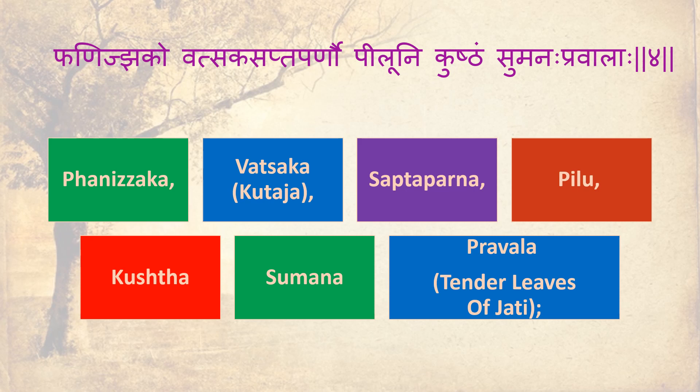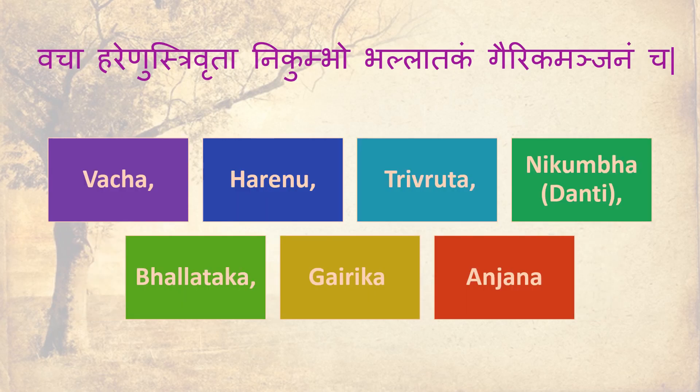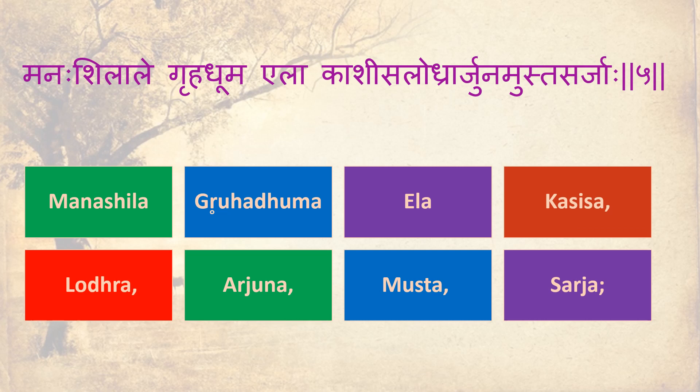Phaninjago, Valsaga, Saptaparna, Peeleuni, Kushtam, Sumanah, Prawala Vajja, Harenu, Trivrida, Nikumbha, Valladagam, Gairiga, Anjanam, Chha Manashilale, Krihaduma, Ela, Kasisa, Lodra, Arjuna, Musta, Sarjah — completing the full ingredient list.